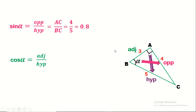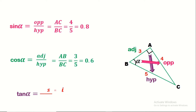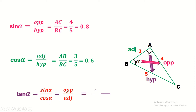Now, cosine alpha equals adjacent over hypotenuse. The adjacent is side AB over the hypotenuse BC, so it's 3 over 5 equals 0.6. Note that it's also less than or equal to 1. Tangent alpha can be written as sine alpha over cosine alpha, or as opposite over adjacent, which is 4 over 3. Also, 0.8 over 0.6 gives us the same answer, 4 over 3. So both rules are correct and we can use either one.